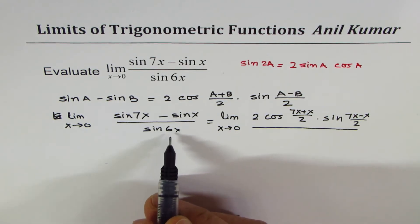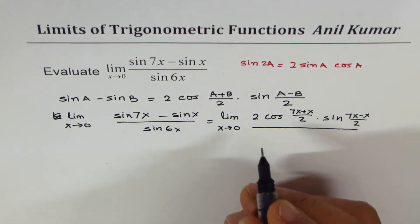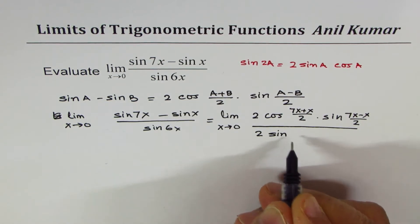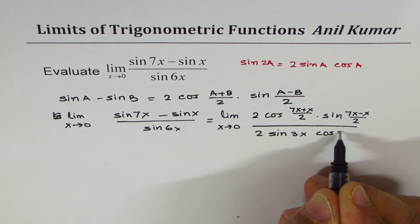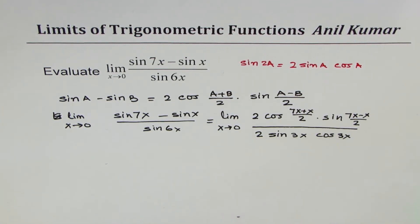Sine 6x, half of 6 is 3, so I could write this as 2 sine 3x cos 3x. That's what you get.